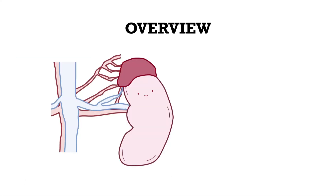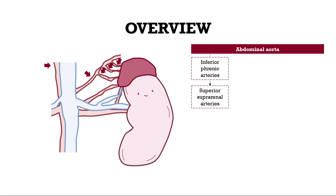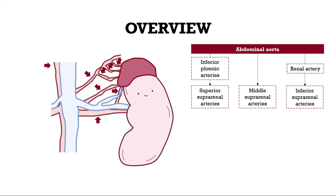There are three main groups of vessels that supply the adrenal gland with blood, starting from the abdominal aorta: the superior suprarenal arteries derived from the inferior phrenic arteries, the middle suprarenal artery derived from the aorta, and the inferior suprarenal arteries derived from the renal artery. All these arteries drain into the medullary vein and from there into the suprarenal vein.